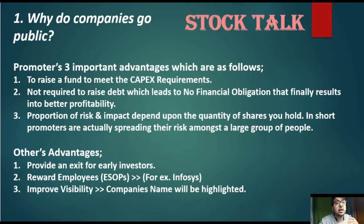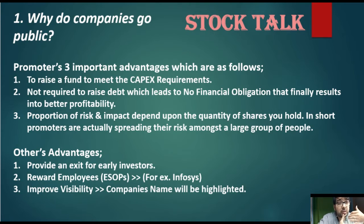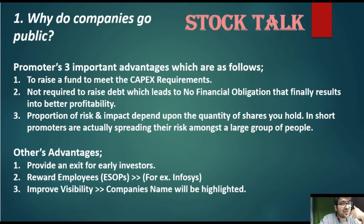There are additional advantages. Once equity shares are listed on the stock market and publicly traded, earlier investors can exit. Another benefit is rewarding employees — the company allots stocks to employees, who benefit from capital appreciation. These are called employee stock options, and Infosys is the best practical example. Lastly, listing improves visibility — once listed, the company stays in the news, which builds its image, grows the business, increases goodwill, and raises the business valuation.